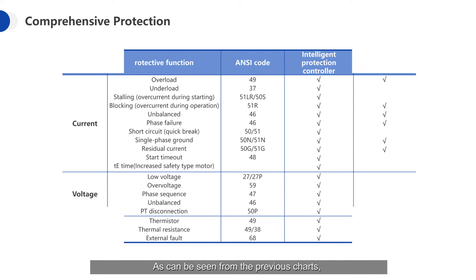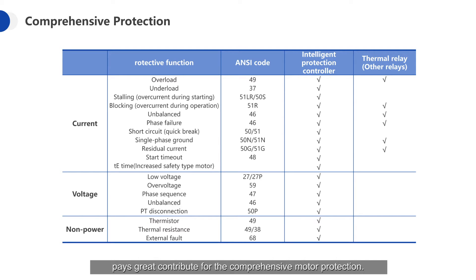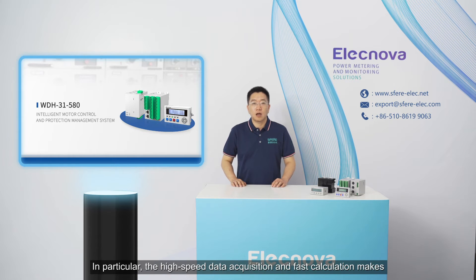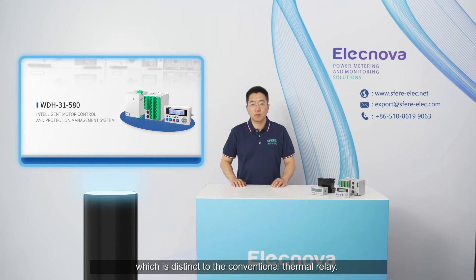As can be seen from the previous charts, the motor controller contains great protection functions. The protection enhancement by voltage and non-electrical protection contributes greatly to comprehensive motor protection. In particular, high-speed data acquisition and faster calculation make the identification of fault signals and quick response possible, which is distinct from the conventional thermal relay.